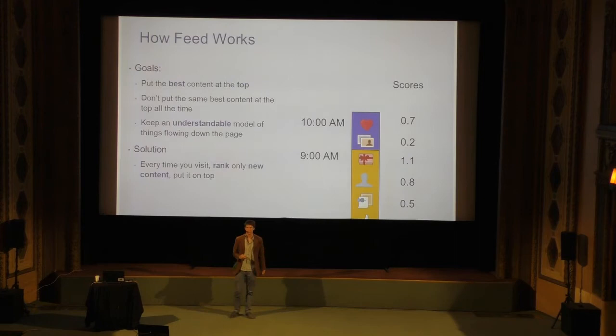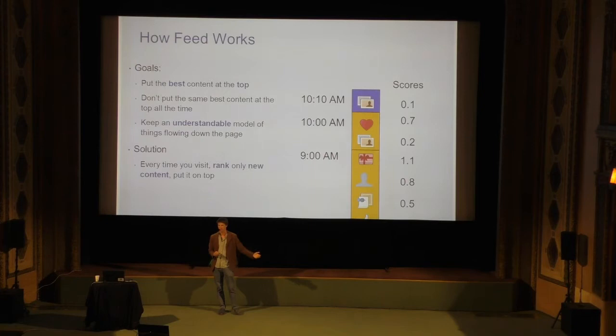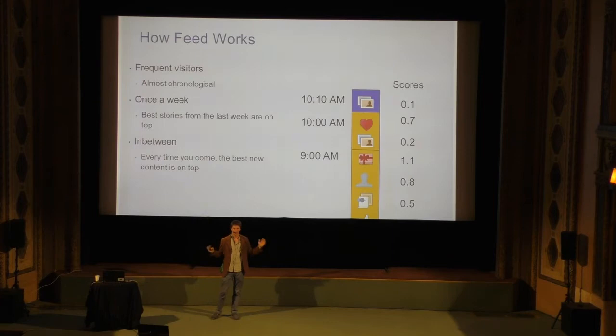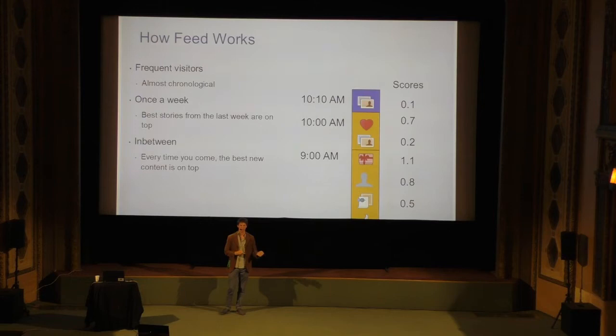When you come back 10 minutes later, there are only a couple of new stories — we rank those and put them at the top. If you come only once a week, we take everything from that entire period and rank it so you see the most important story from the last week. Whereas if you come very often, it becomes more and more chronological — in the limit, there's only zero or one new stories and that comes at the top.